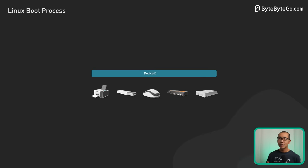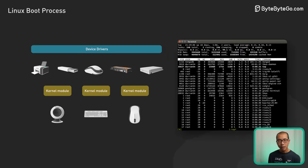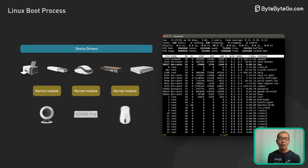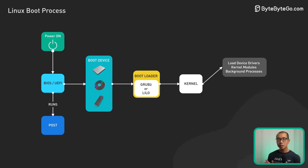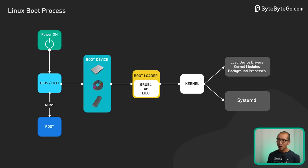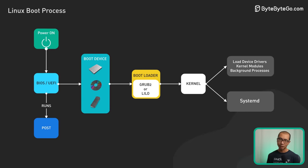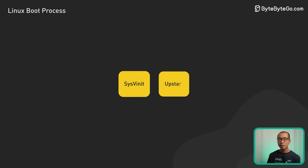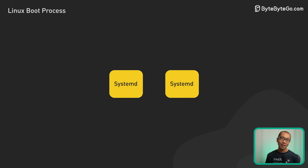First, the kernel decompresses itself into memory, checks the hardware, and loads device drivers and other kernel modules. Next, an initial process called init kicks off, which in modern Linux systems is typically Systemd. Systemd has replaced older init systems like SysV Init and Upstart, and is the parent of all other processes on Linux.